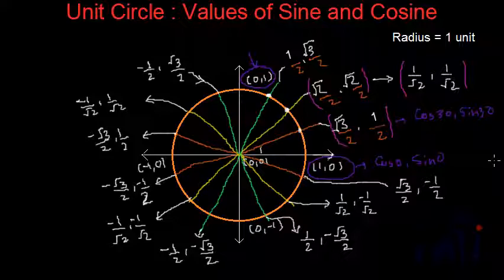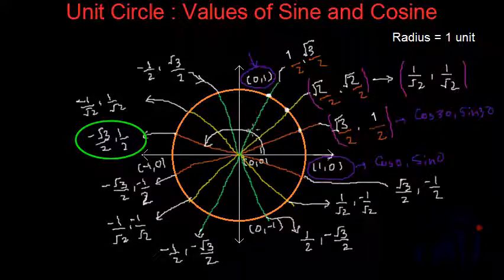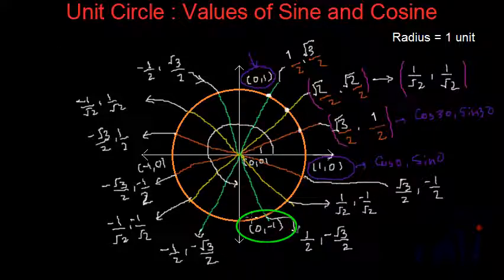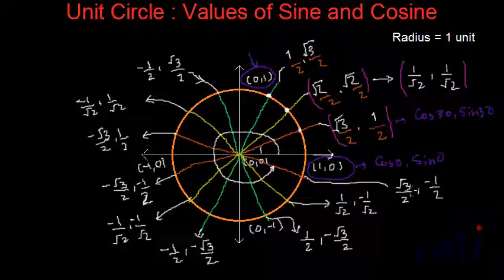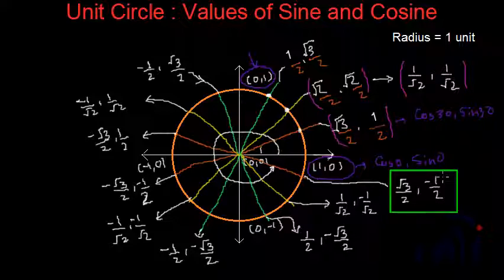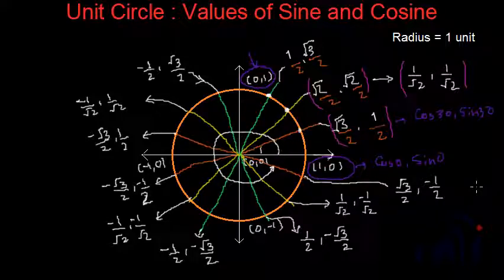For example, to find cosine 150 and sine 150, reflect the first quadrant values across the y-axis — those give cosine 150 and sine 150 for the angle at 150 degrees. For cosine 270 and sine 270, cosine 270 is 0 and sine 270 is −1. Similarly, for cosine 330 and sine 330, the angle is 330 degrees and the values are root 3 over 2 and minus 1 over 2. You just find the values in one quadrant and reflect across the axes to get all cosine and sine values.